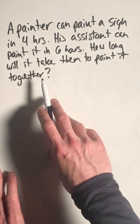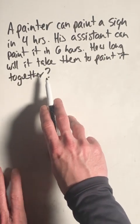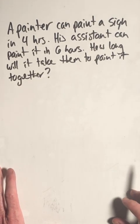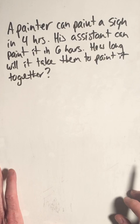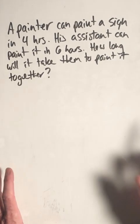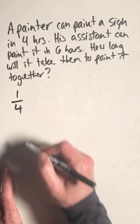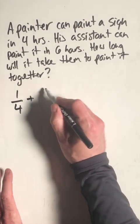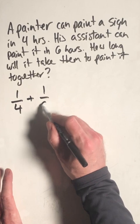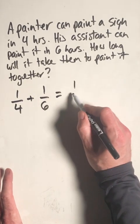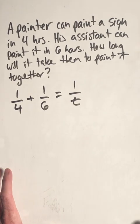So a painter can paint a sign in four hours, his assistant can paint it in six hours. How long will it take them to paint it if they work together? Well, the best way to do this is to create an equation using rational expressions. We have one painter who works in four hours, plus another painter who works in six hours, and we want to know how long will it take them if they work together.